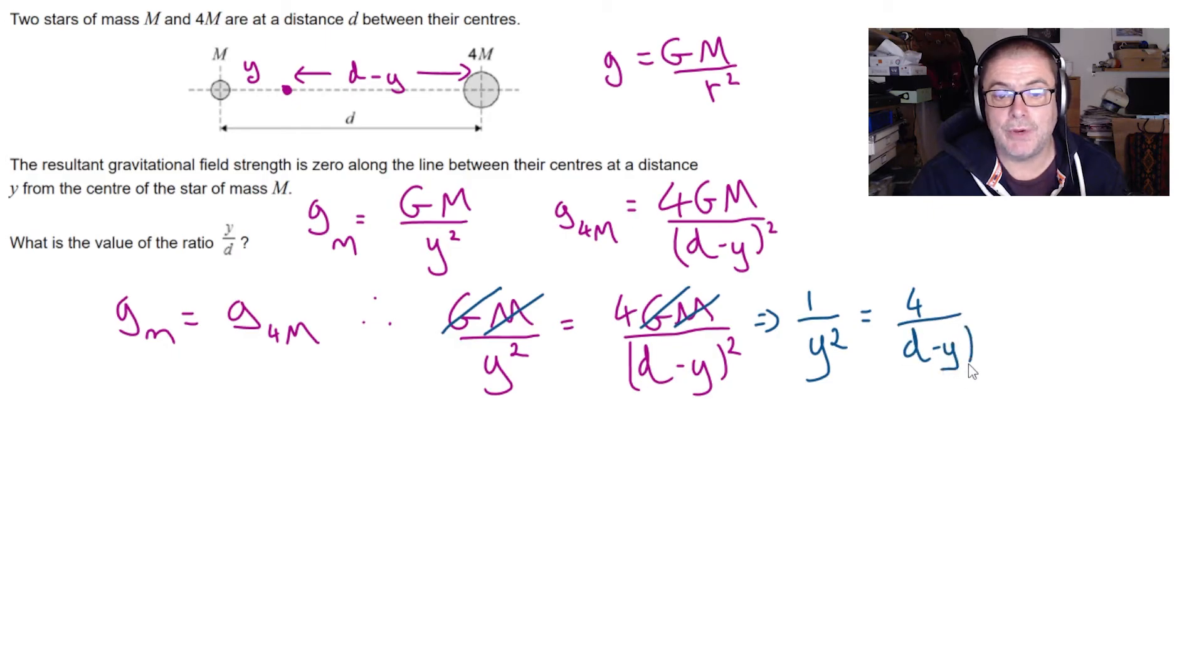And at this point you can see that it's useful to cross multiply. And this leads to d minus y squared is equal to 4 y squared.